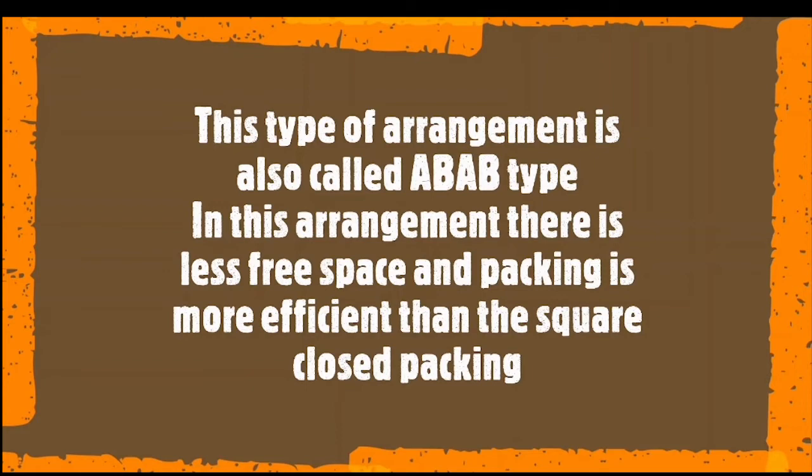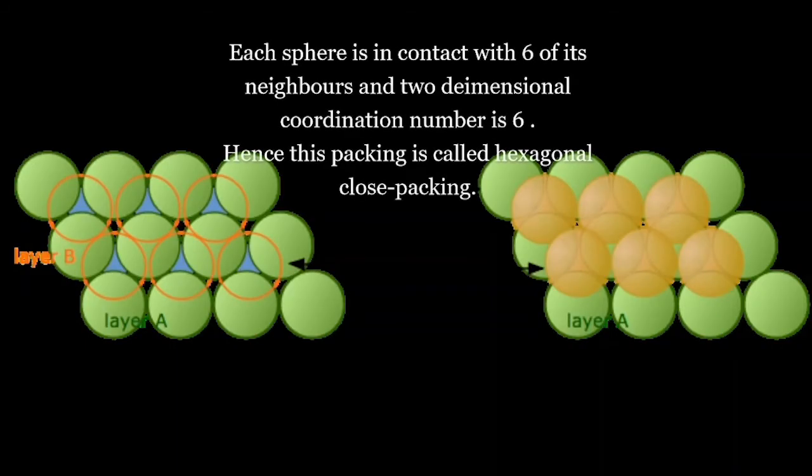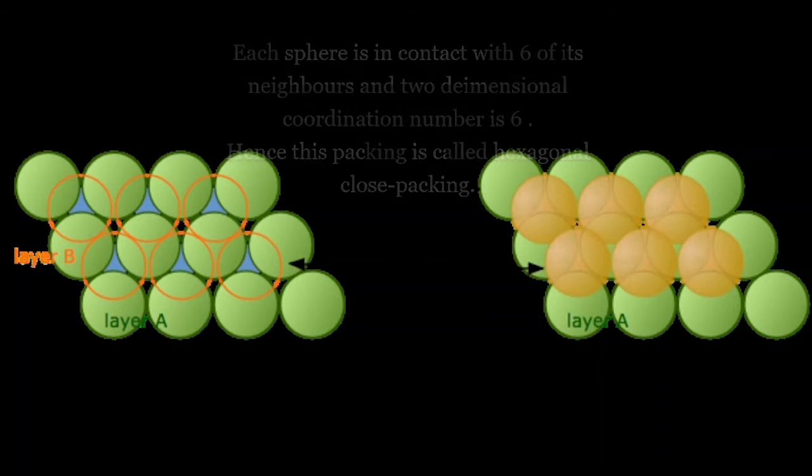This arrangement has less free space and packing efficiency is more than the square closed-pack. Each sphere is in contact with six of its neighboring atoms and hence the coordination number is 6. Hence its packing is also called hexagonal closed packing.